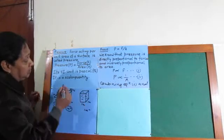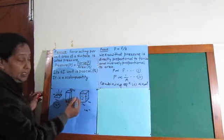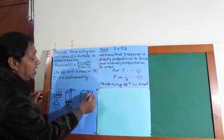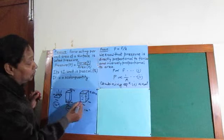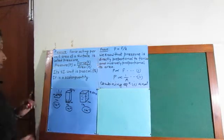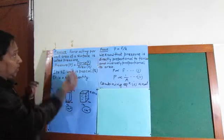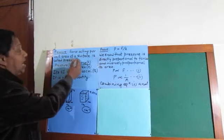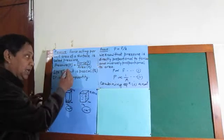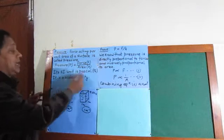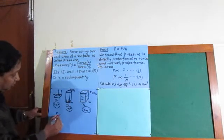The bottom part of this container is 1 meter length and 1 meter breadth, and a certain amount of water is contained in it. If we have 500 Newton of water, then 500 Newton weight force is acting through one square meter area, and this represents the pressure. That's why pressure is defined as force acting per unit area of a surface. It is represented by the equation: pressure P equals force divided by area, and its SI unit is Pascal.